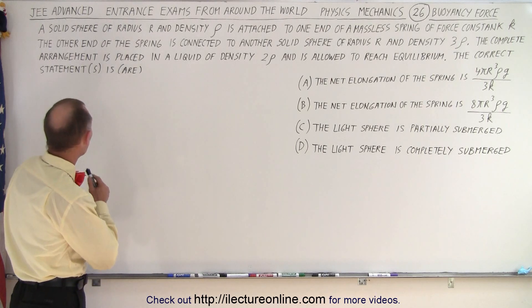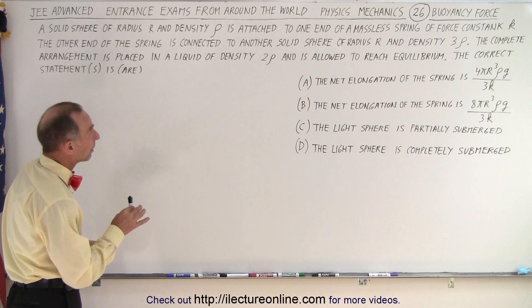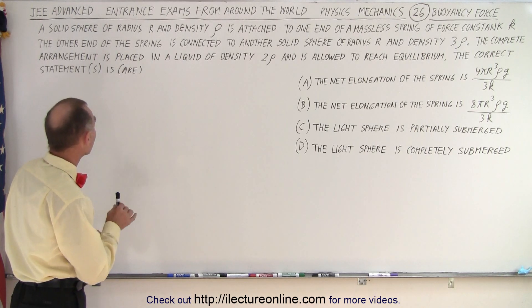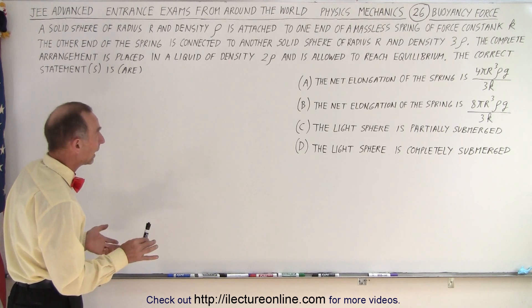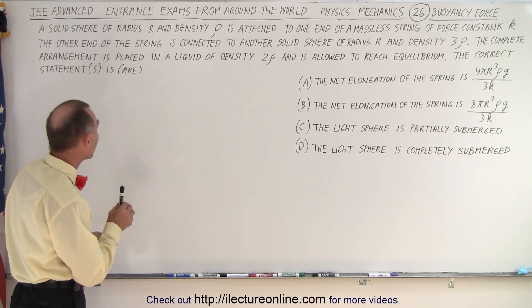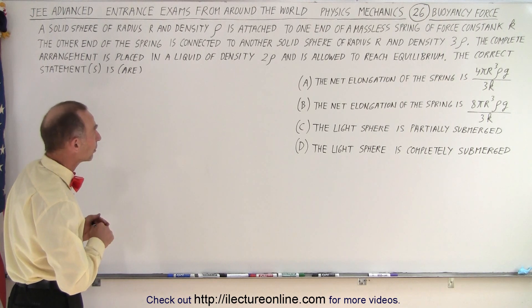Now let's read the problem. It says a solid sphere of radius r and density rho is attached to one end of a massless spring of force constant k. The other end of the spring is connected to another solid sphere of radius r and density 3 rho.